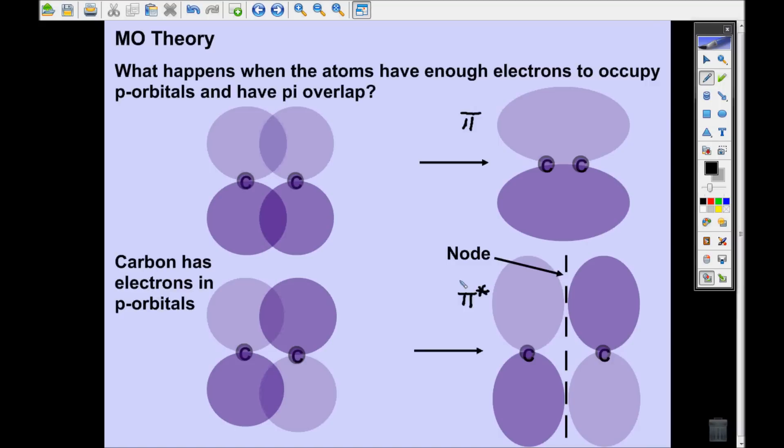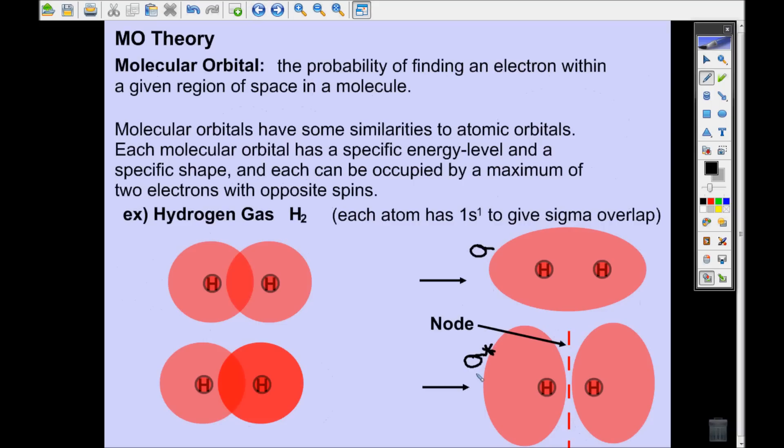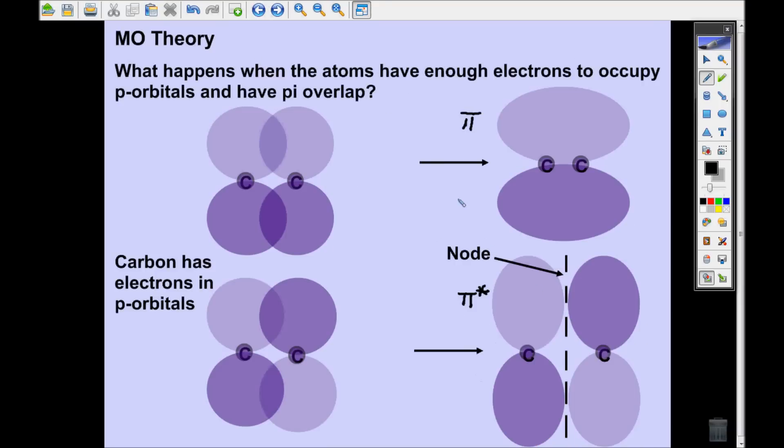The thing that you have to remember about antibonding and bonding orbitals, no matter if you're looking at sigma, like in the hydrogen atom, or you're looking at the carbon atom with pi electrons, the antibonding orbitals are higher in energy. This one right here is called a destabilized orbital because it is higher in energy than the individual atomic orbitals.